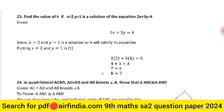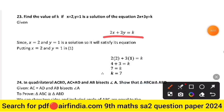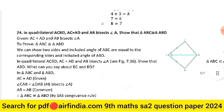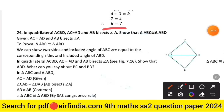Question 23: find the value of k if x = 2, y = 1 is a solution of the equation 2x + 3y = k. Since (2, 1) satisfies the equation, substitute x = 2 and y = 1: 2(2) + 3(1) = 4 + 3 = 7. Therefore k = 7.